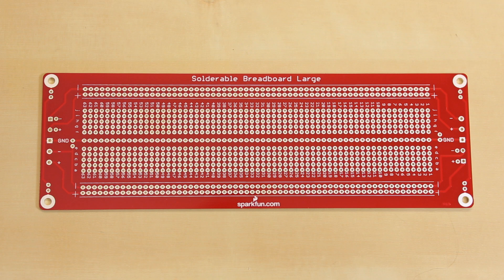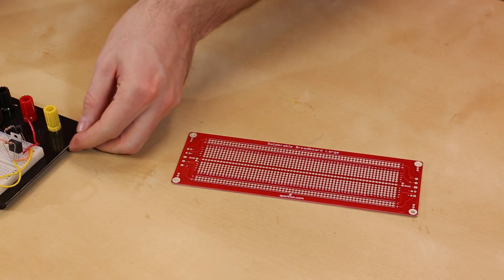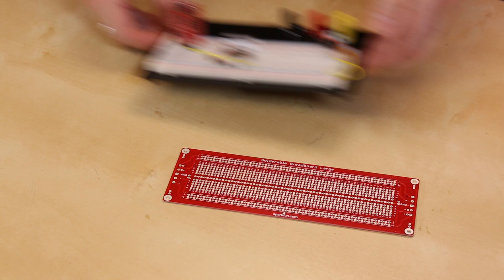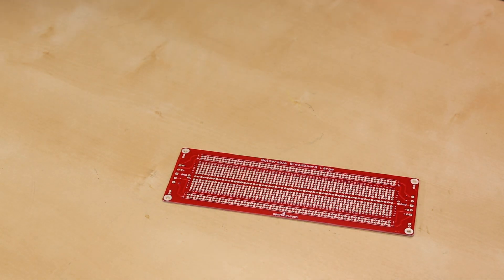First up, we've got a new solderable breadboard. This is very similar to the smaller one that released, I think it was a few weeks back. This one mates with a breadboard of this size. The idea behind this and the other one is that you would lay this over top of your breadboard.